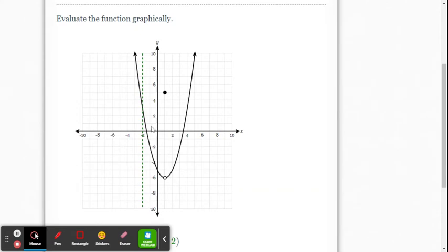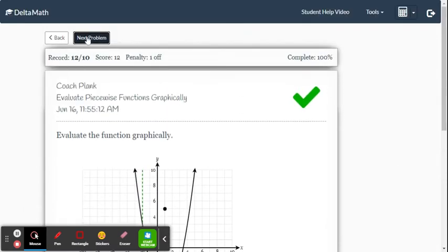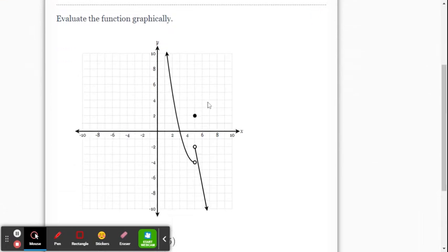Again, there's a graphical approach to it with the vertical green dashed line there, showing you where it intersects the graph. When x is negative 2, y is 3.